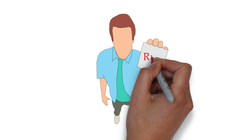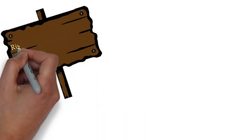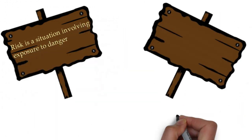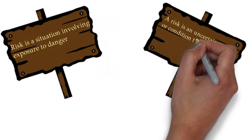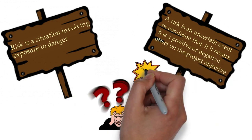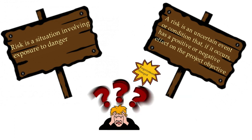First we will discuss about risk. The definition of risk is a situation involving exposure to danger, or we can say it as an uncertain event or condition that if it occurs has a positive or negative effect on the objective of the project. If time to market is an objective of the project then we need to deliver the product to the customer as early as possible. So if any risk happens which is impacting the objective or causing a delay in delivering the product to the market, then it's a problem.